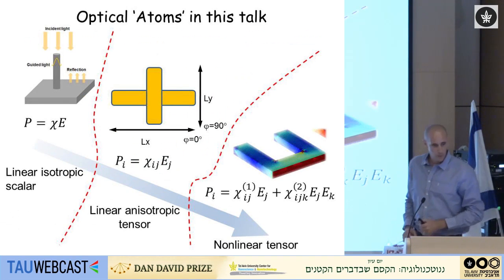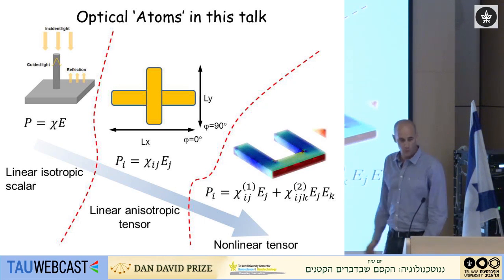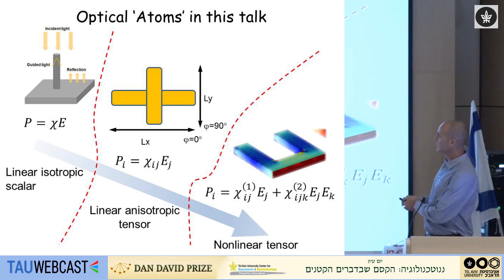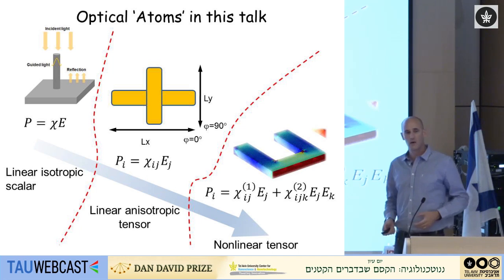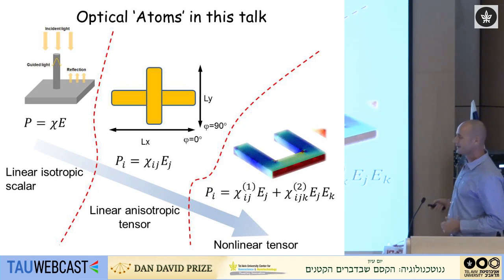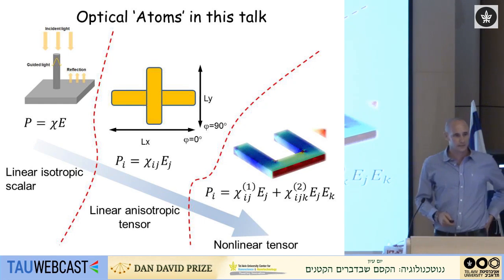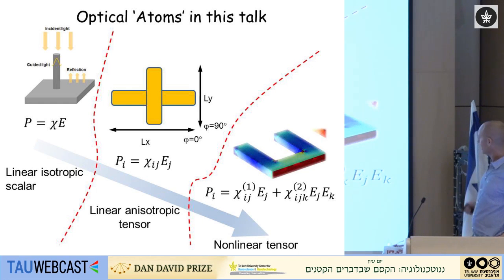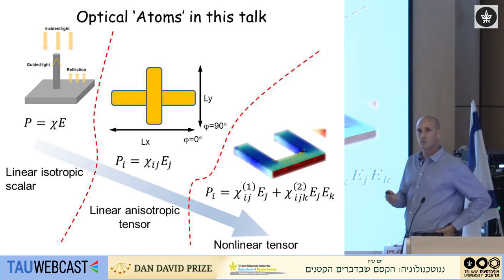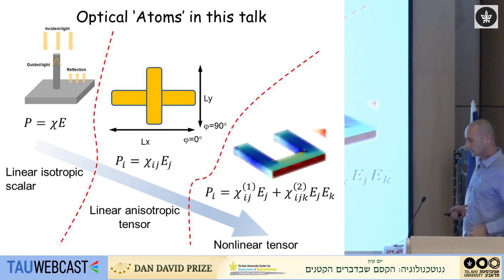Today I will describe three different atoms that we work with in my group. I will start with silicon nanowires on silicon wafers and show how they allow us to control the linear isotropic scalar relation between light and matter. Then I will move to plasmonic rod-shape nano-antennas and show how we can get linear anisotropic tensor relations. Finally I will finish with split-ring resonators and show how we can get both linear and nonlinear tensor relations.